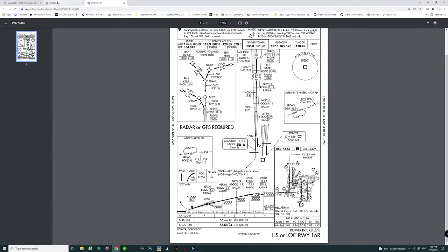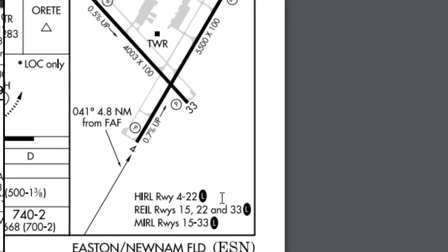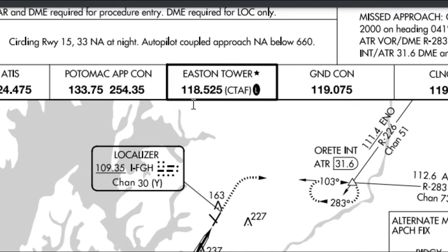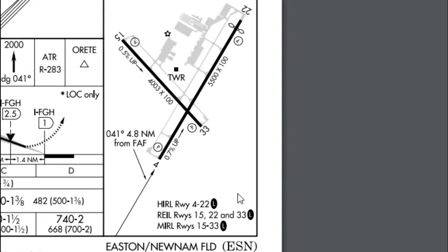Now looking at another ILS approach plate, there's a small L next to the runway lighting notation. That tells us the runway lighting is pilot activated. On an approach plate like this, at the top where we have our tower frequency, we also see that little L. The frequency shown — 118.525 — is also the frequency we need to key up to activate the runway lighting. If you see that symbol darkened in, it means pilot-activated lighting; but on this particular airport the PAPI lights are always lit because they're depicted with a hollowed-out symbol.